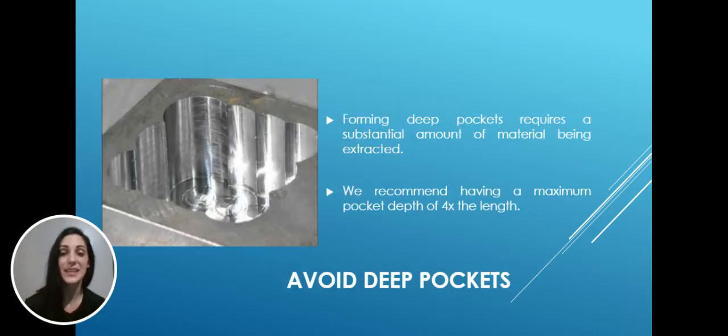The second piece of advice is avoid deep pockets where possible. Sometimes this is not possible due to the requirement of the part. However, forming deep pockets requires a substantial amount of material being extracted, which is not only time-consuming but it may need a specific tool to get the desired depth. This adds complexity and can also drive up the cost. We recommend having a maximum pocket depth of four times the length. Typical CNC tools can form pockets of up to two to three times their diameter. Any more than this is likely to increase the price overall.